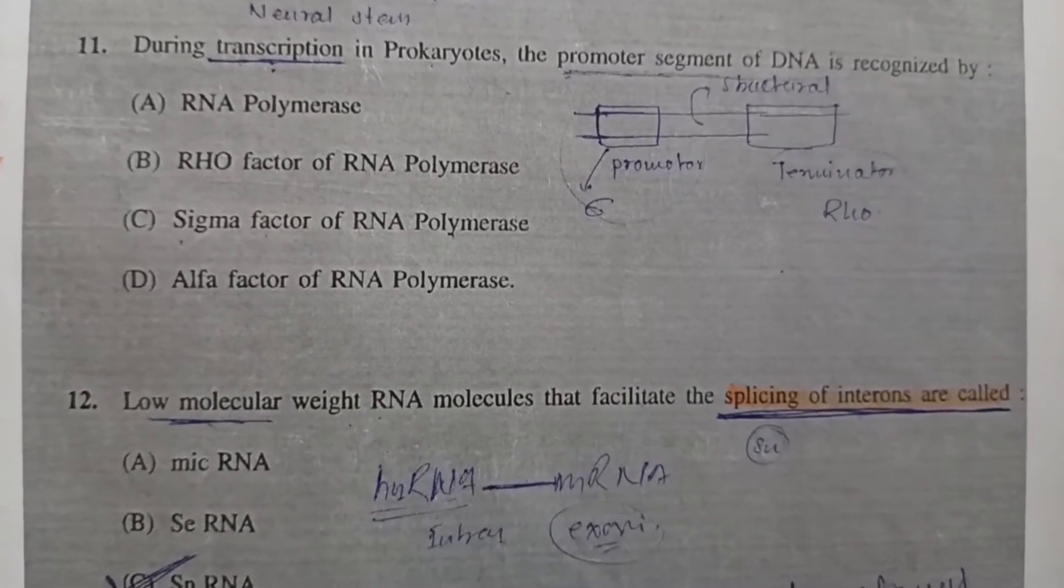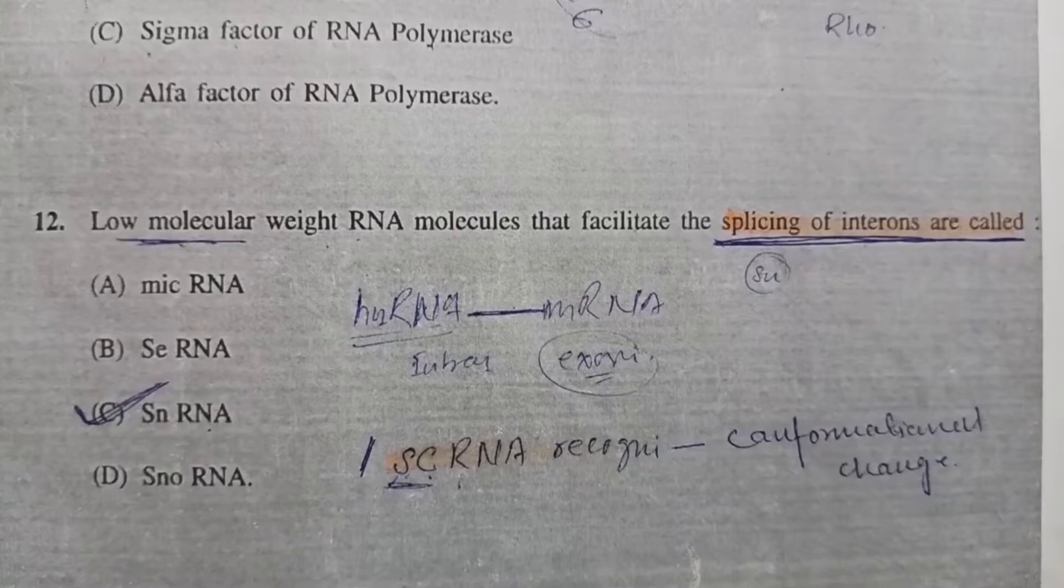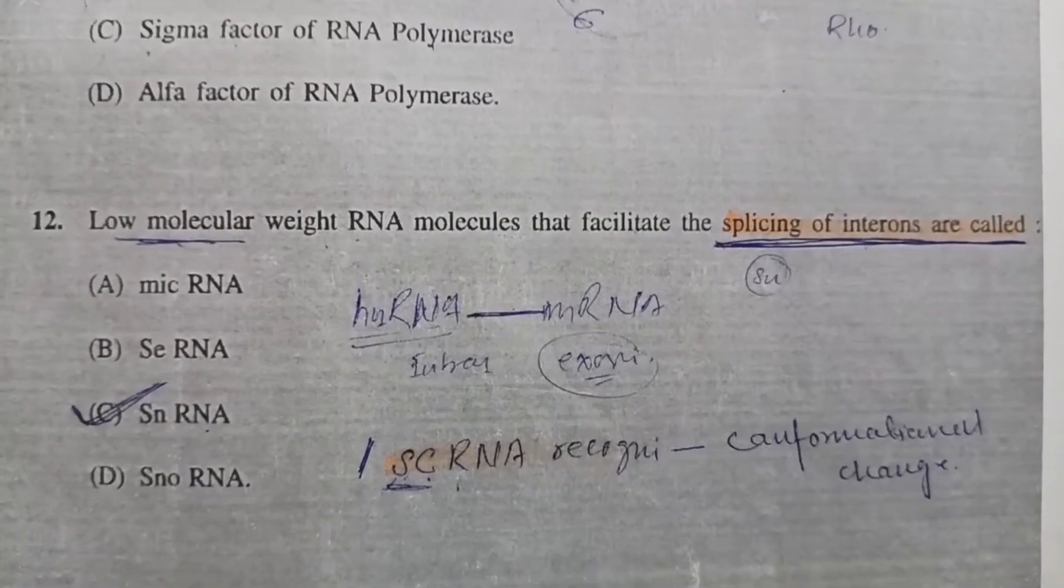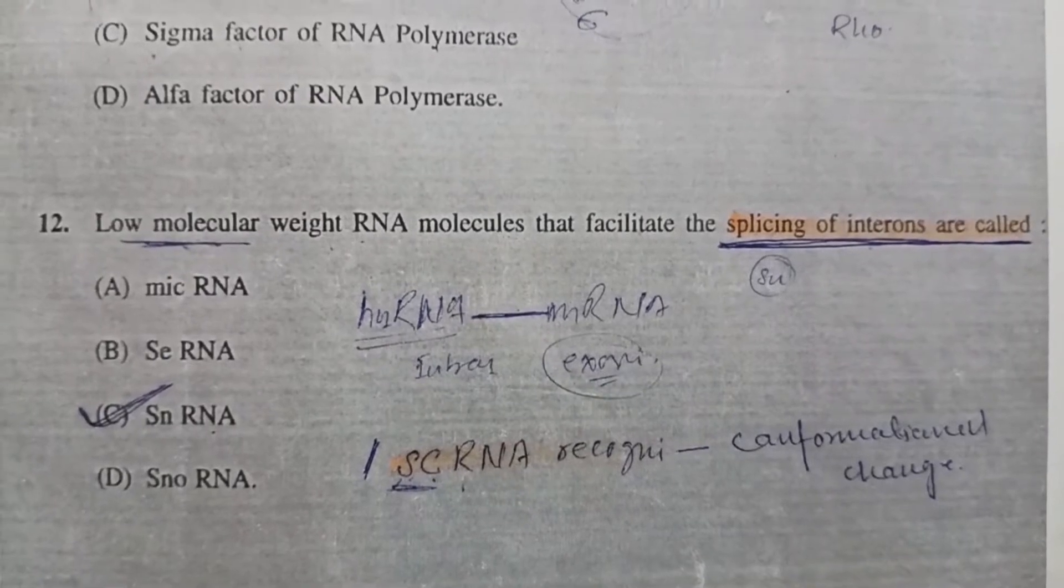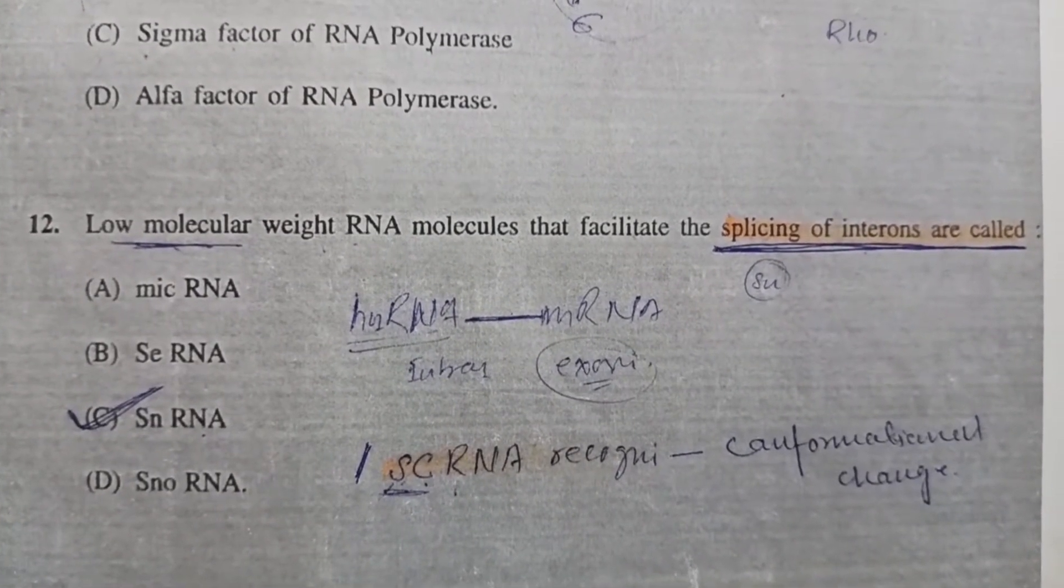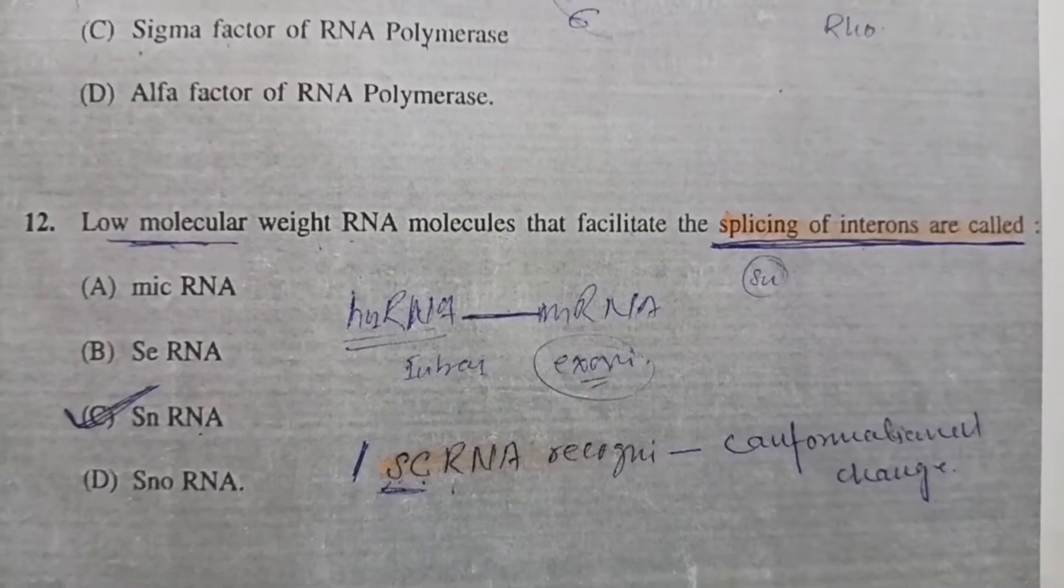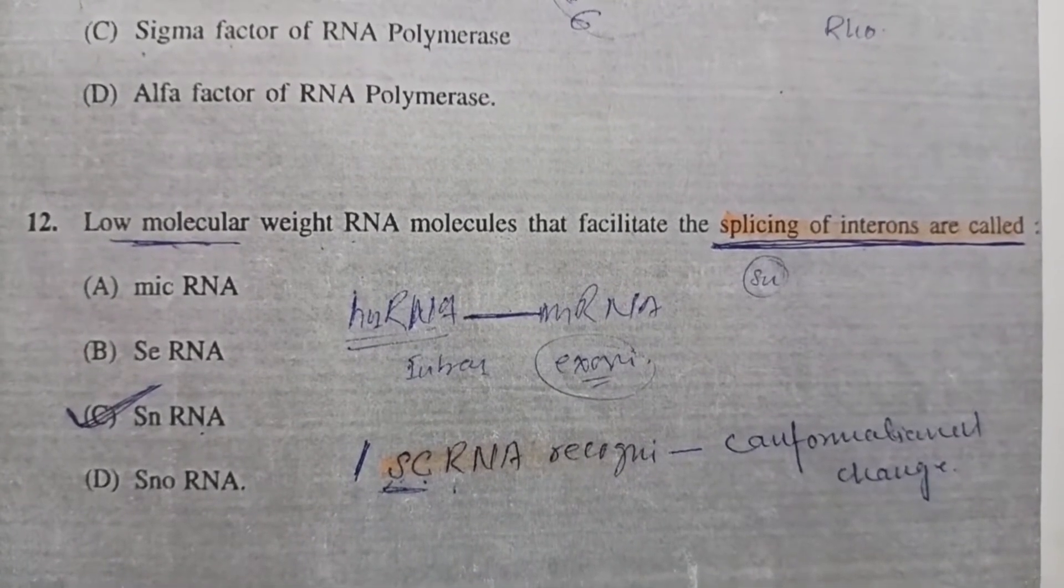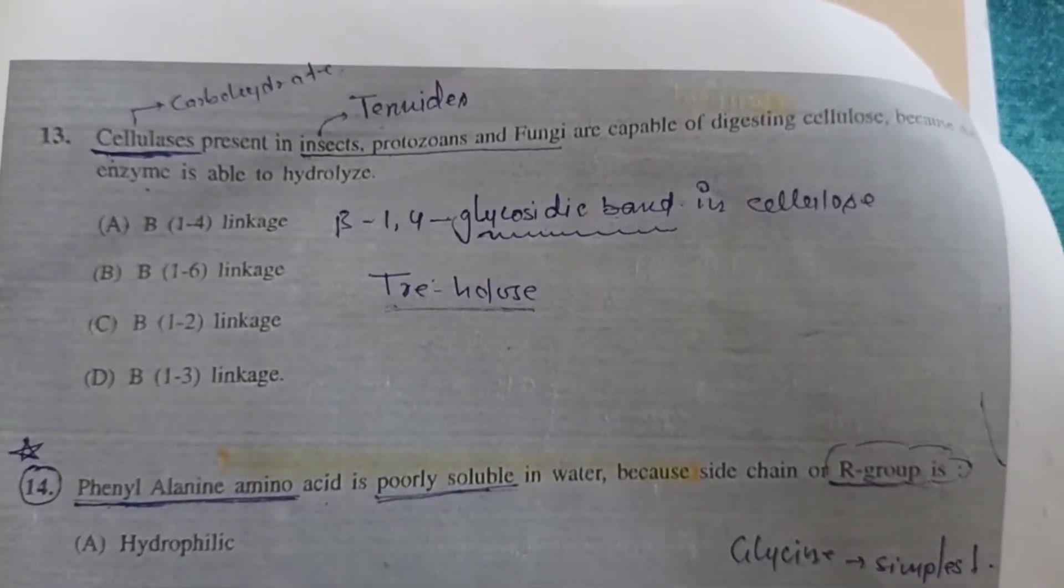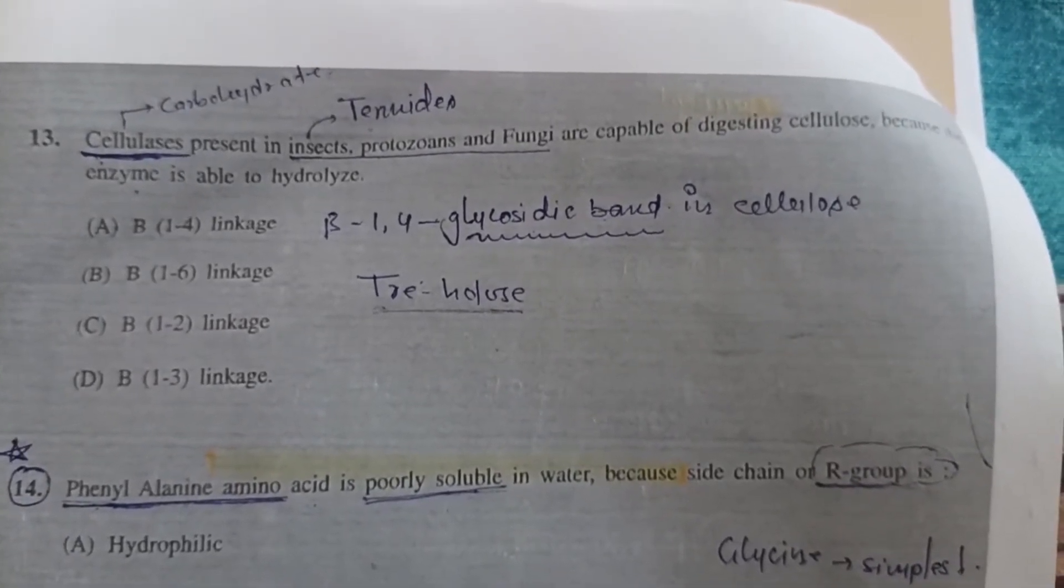Question 12: Low molecular weight RNA molecules that facilitate the splicing of introns are called - Option C, snRNA or small nuclear RNA, which facilitates splicing, a post-transcriptional modification reaction. Question 13: Cellulase is present in insect protosomes and fungi that are capable of digesting cellulose. The enzyme hydrolyzes - correct answer is option A, beta 1,4 glycosidic linkage in cellulose.